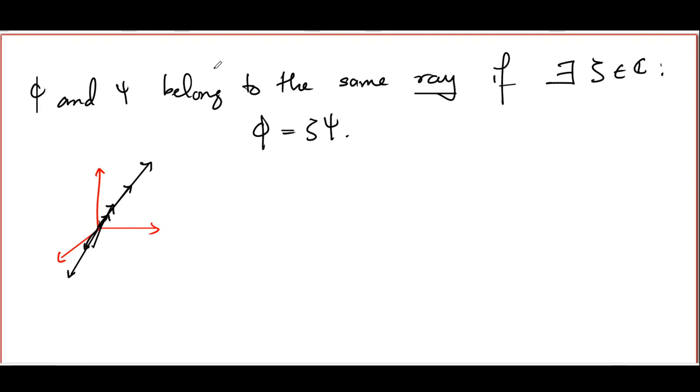By the way, since we are dealing with only normalized vectors, this complex number zeta here cannot be arbitrary. It must have the property that mod of zeta equals 1, because only then will it ensure that when you multiply a normalized vector psi by zeta, you are going to end up with another normalized vector. Now, this is about states.